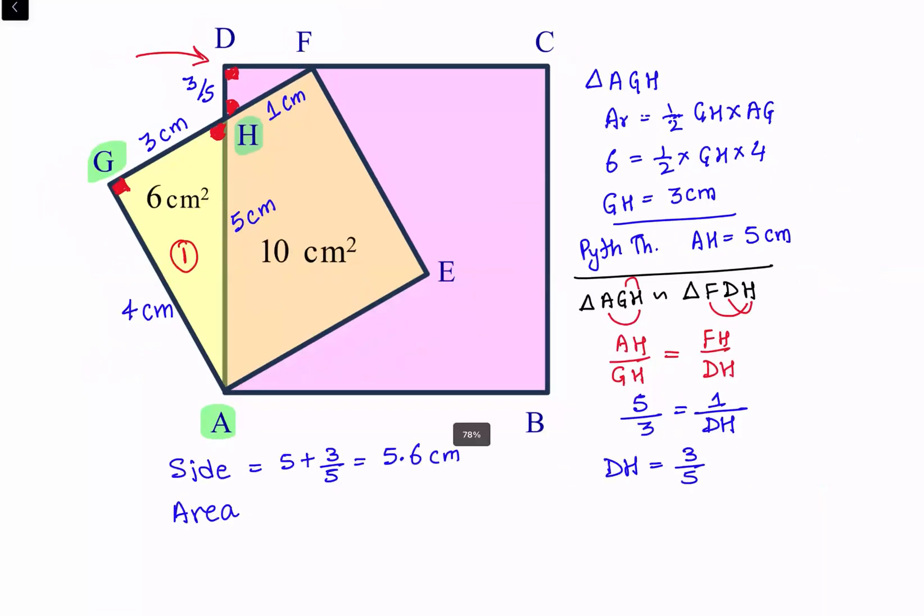And the area of the bigger square which we have to find, that will be side square. So 5.6 square is 5 square plus 6, that's 31, and 6 square is 36. So 31.36 centimeter square, and that's our final answer.